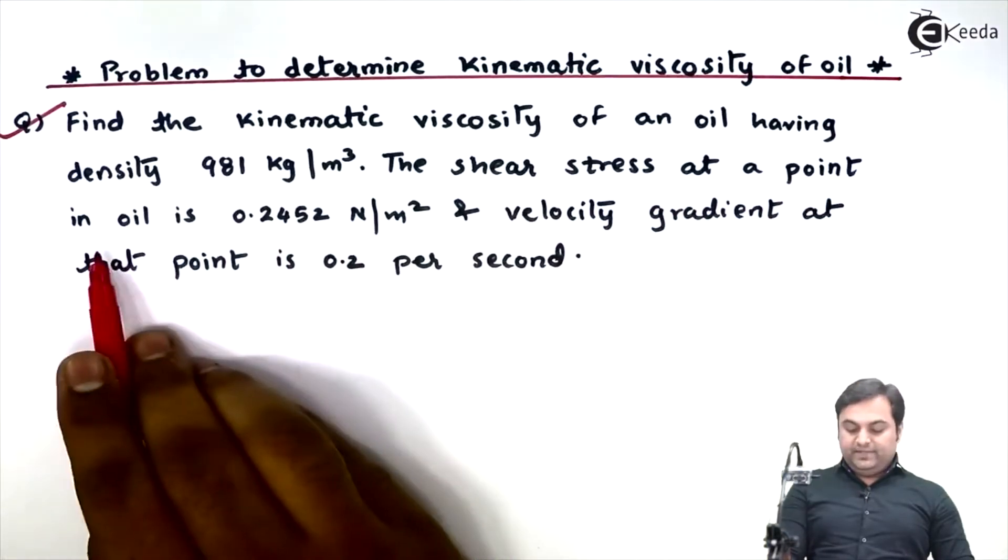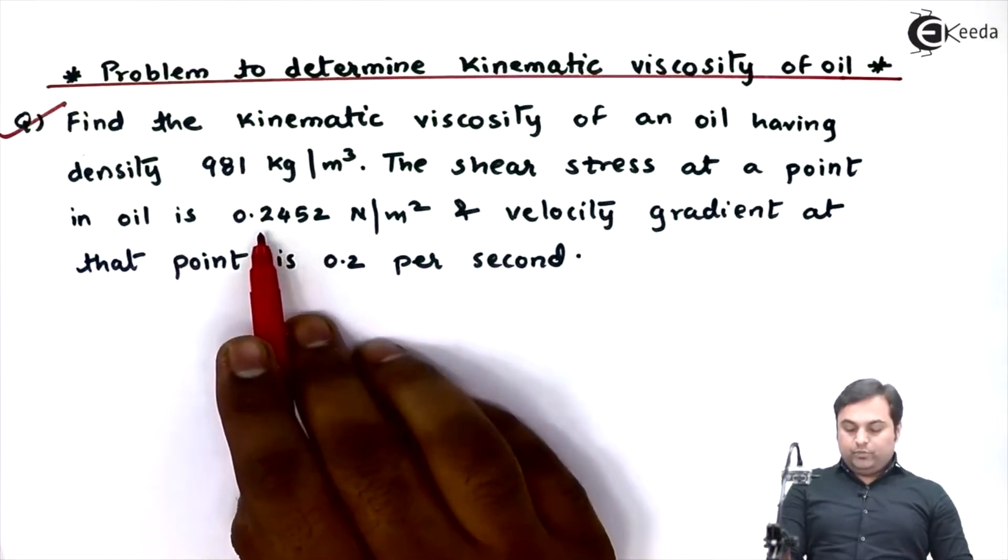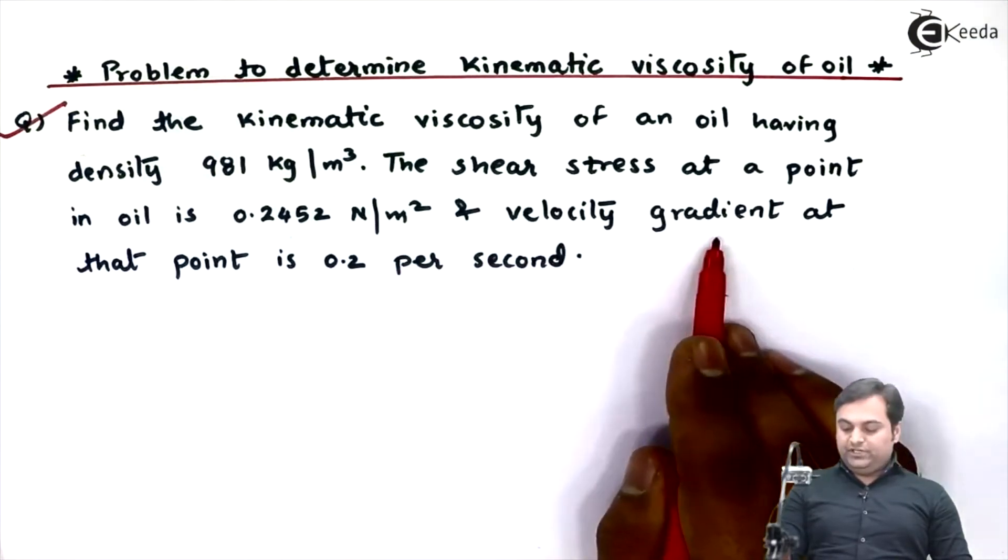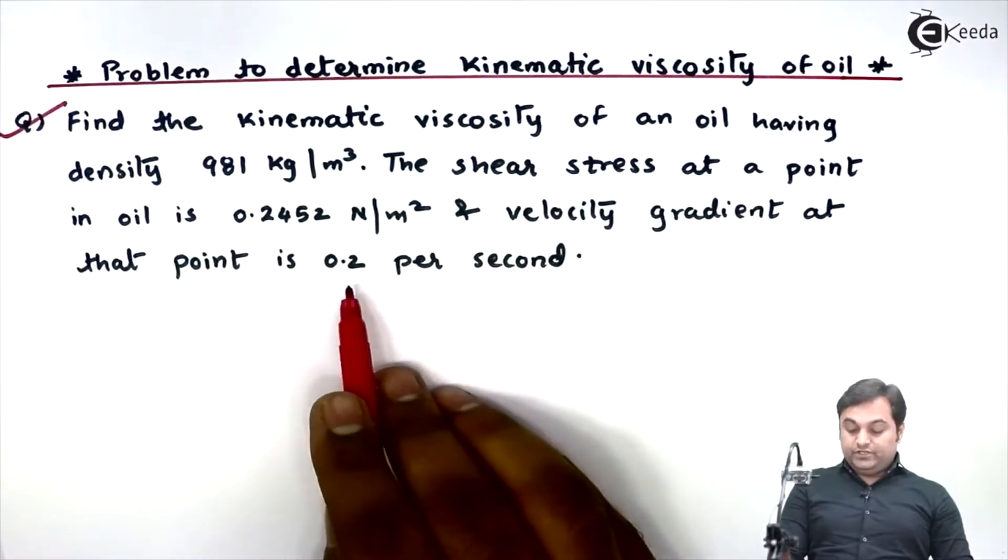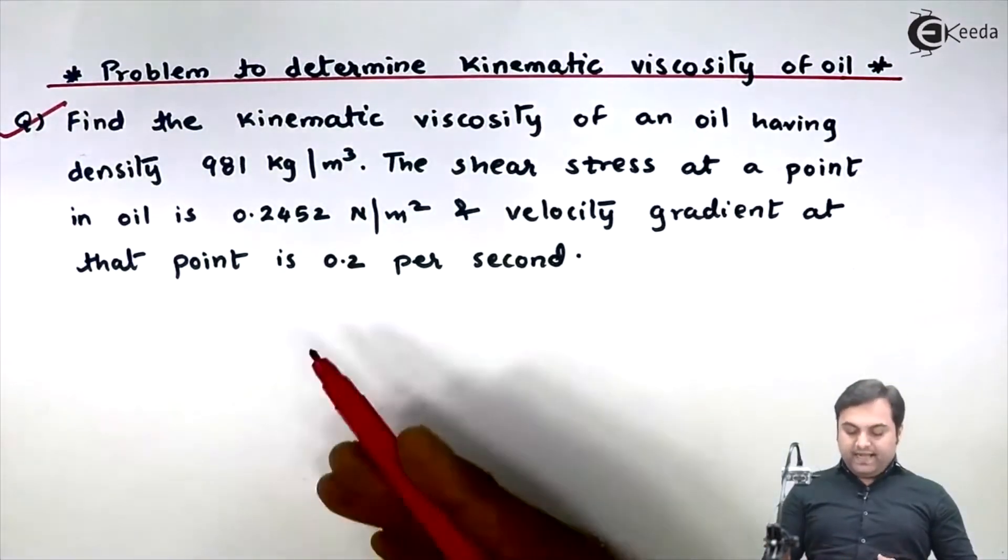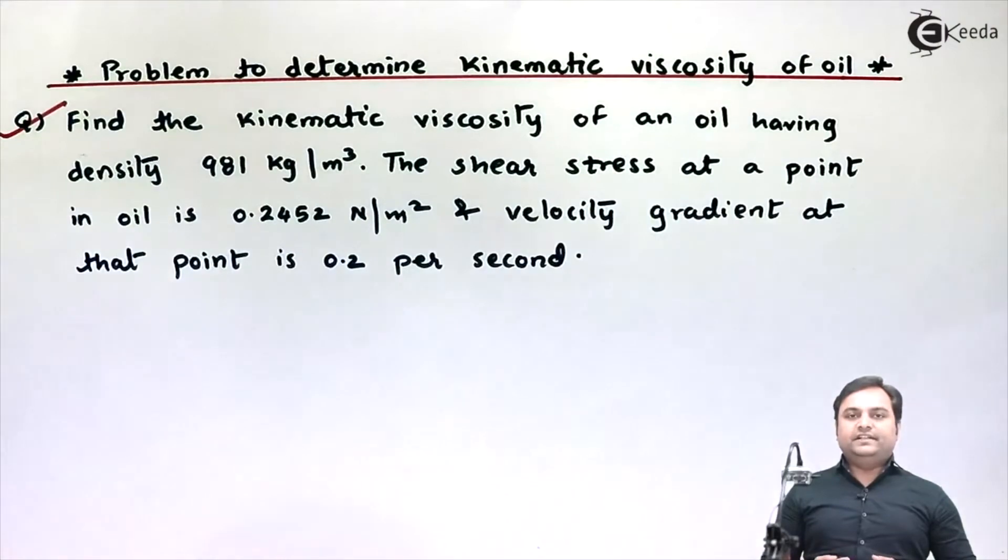The shear stress at any point in oil is 0.2452 Newton per meter square and velocity gradient at that point is 0.2 per second. This is the question we have.